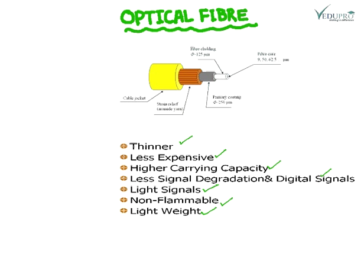This optical fiber works on the basis of total internal reflection. If a light wave enters at one end of the fiber, it travels through and exits at the other end. The structure is very simple and consists of three parts. The first part is called the core, which is the inner part of the optical fiber.